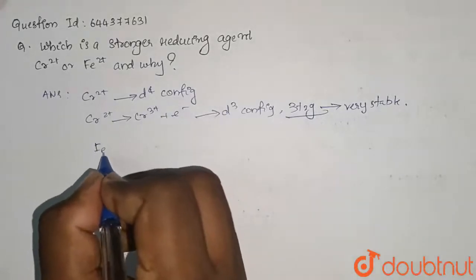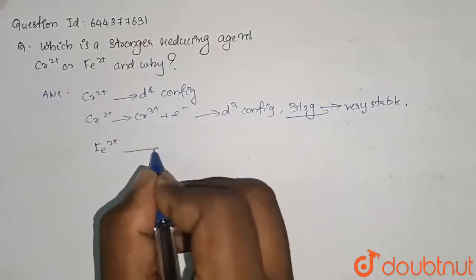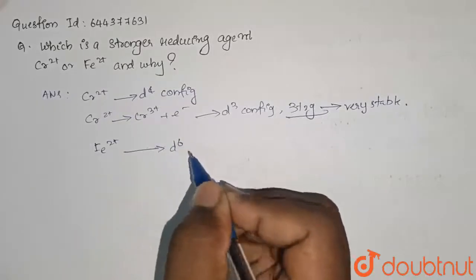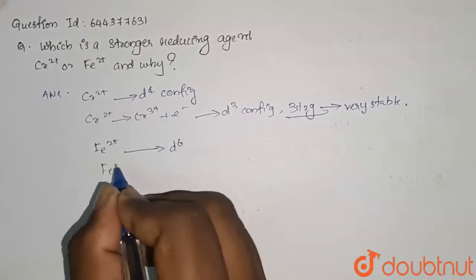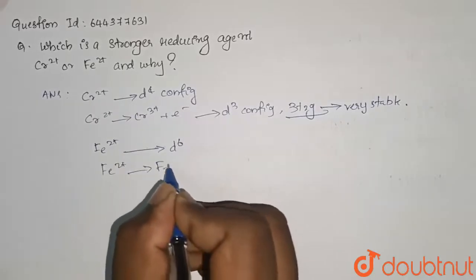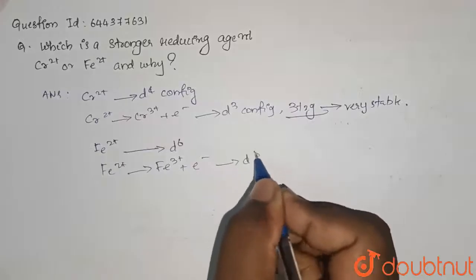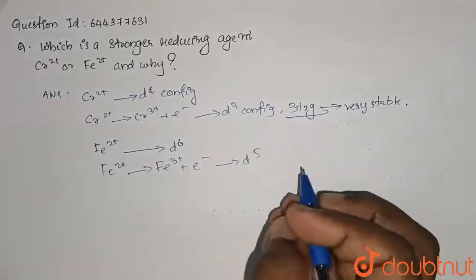Now let us take the case of Fe2+. Again, Fe2+ has a d6 configuration. So it oxidizes to Fe3+ plus one electron to a d5 electronic configuration.